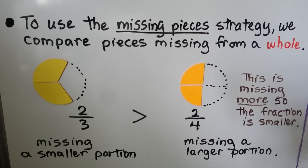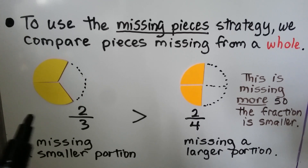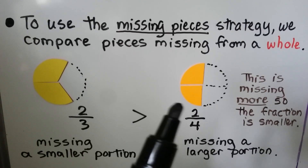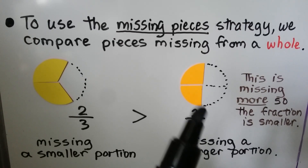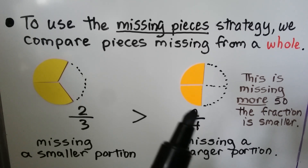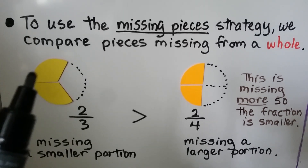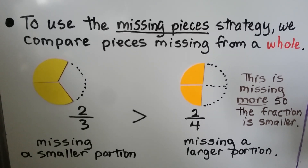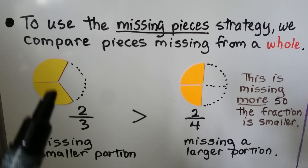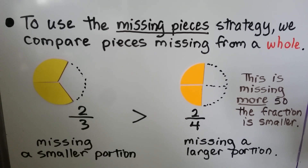To use the Missing Pieces strategy, we compare pieces missing from a whole. Here we have two-thirds of a circle, and here we have two-fourths of a circle. This circle is missing more, so the fraction is smaller. This is missing a smaller portion — that's a larger fraction. Two-thirds is greater than two-fourths. We compare how much is missing, and the one that's missing less is the greater fraction. The one that's missing more is the smaller fraction.